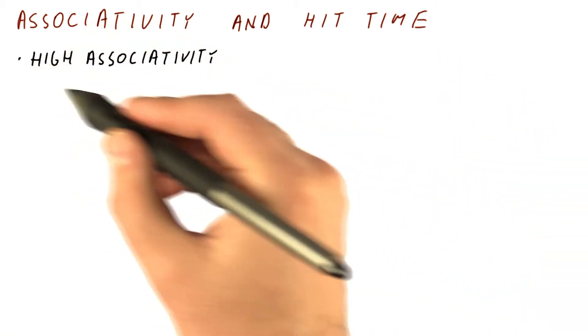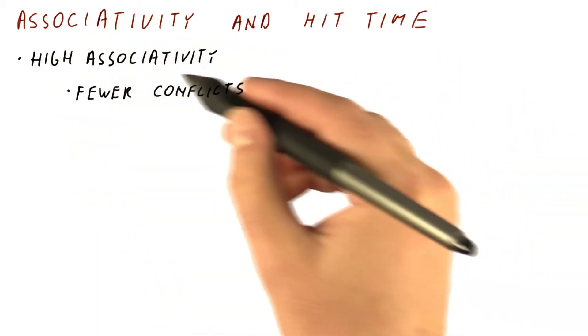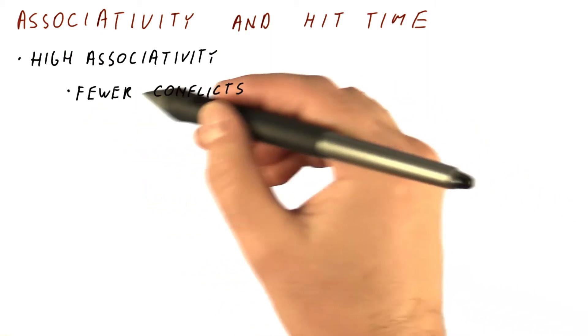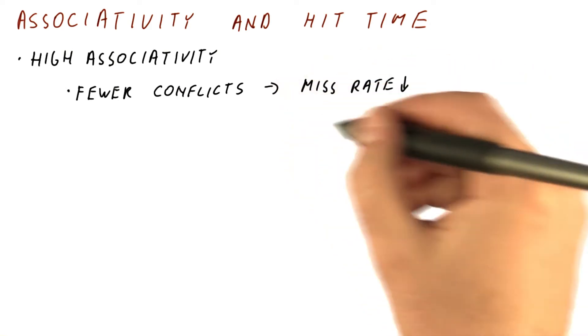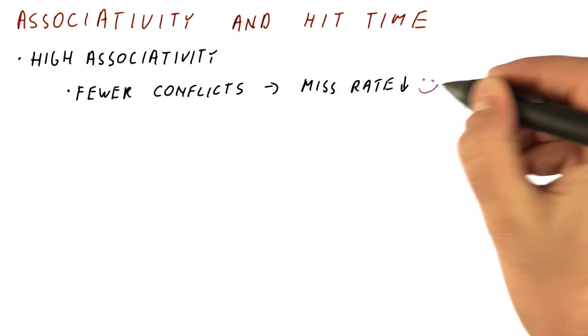If we have high associativity in the cache, we will have fewer conflicts for the set in the cache when multiple blocks want to use the same set, which leads to a lower miss rate, and that we like.